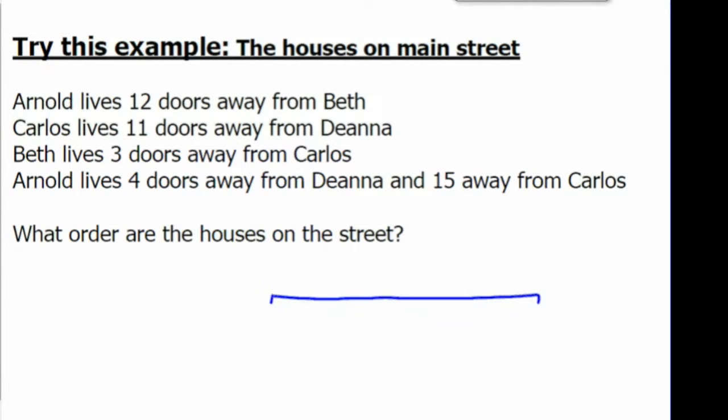So what order are the houses on the street? Let's start with the biggest number 15 and Arnold lives 15 doors away from Carlos. So we'll start our number 15. And Arnold is at house 0. Carlos is at house 15.